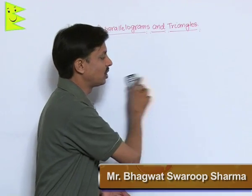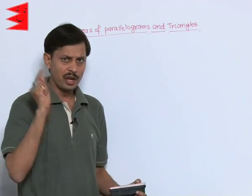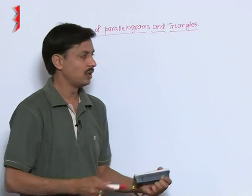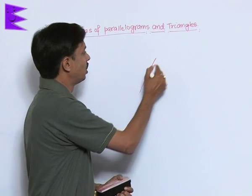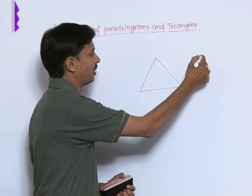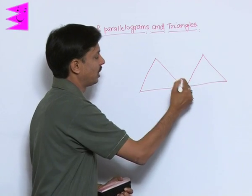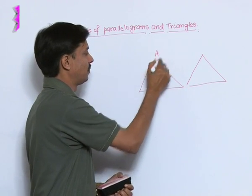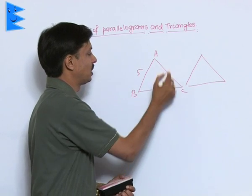if two objects are congruent, then how we say what about their areas? If two objects are congruent, that is, if I say two triangles are congruent, we say their areas are equal.